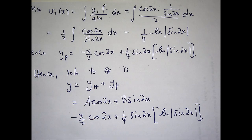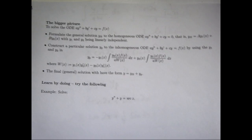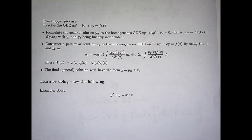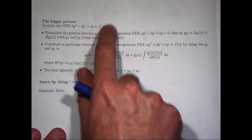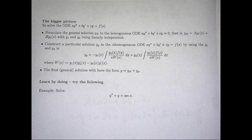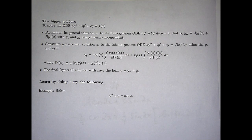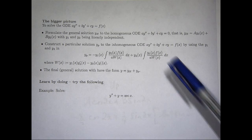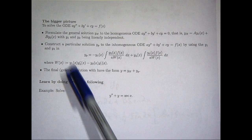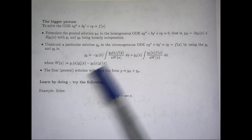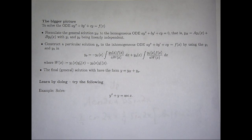So let's look at the bigger picture. Suppose I've got this particular equation where a, b, and c are constants, and f(x) is a given function. The solution method is to solve the associated homogeneous problem, then construct a particular solution using this formula here, where the W, the Wronskian, is just given by this. Add them together and you form the general solution to the original problem.